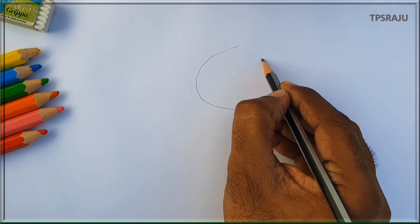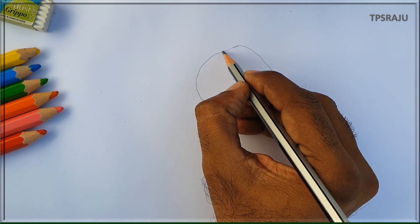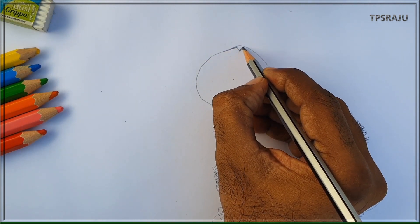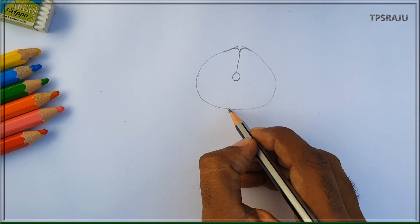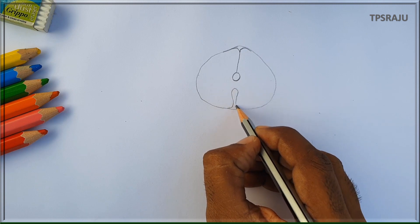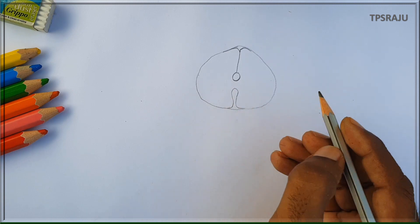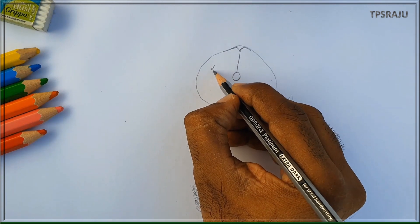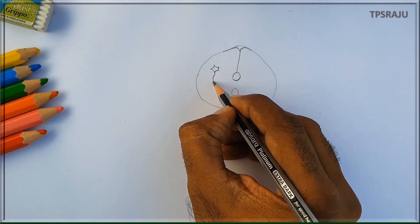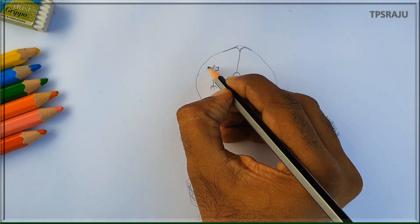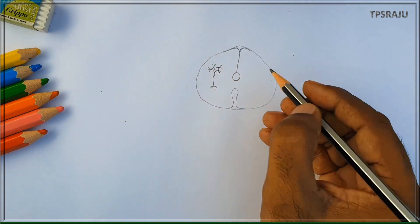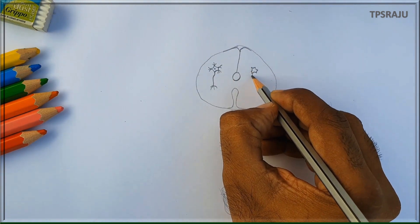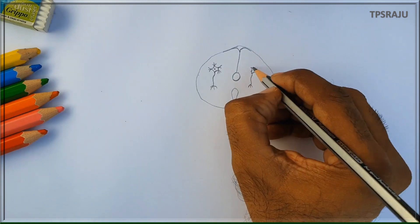Spinal cord plays a major role in reflex actions. So first we have to draw a TS of spinal cord. This is the TS of spinal cord. Some specialized neurons are present in the spinal cord. They receive information from sense organs and create an appropriate response. These are called interneurons or association neurons.